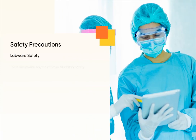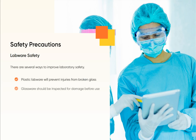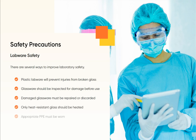There are several ways to improve laboratory safety. Plastic labware will prevent injuries from broken glass. Glassware should be inspected for damage before use, and damaged glassware must be repaired or discarded. Only heat-resistant glass should be heated, and appropriate PPE must be worn.